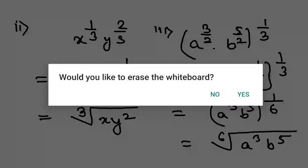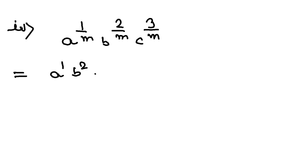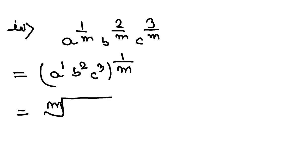Let us go to question number 4. The question is a to the power 1 by m, b to the power 2 by m, and c to the power 3 by m. This is very easy. I can write it as a to the power 1, b to the power 2, c to the power 3, whole to the power 1 by m. Taking 1 by m outside gives us the m-th root of a times b squared times c cubed.